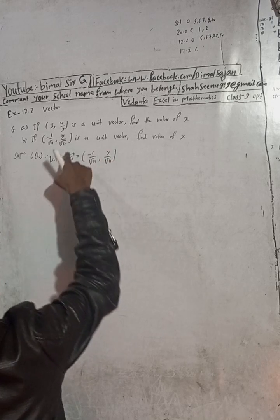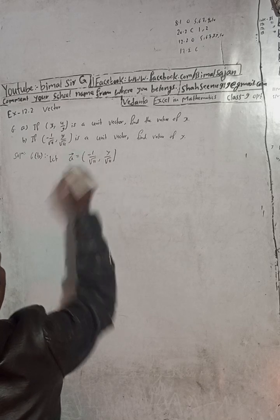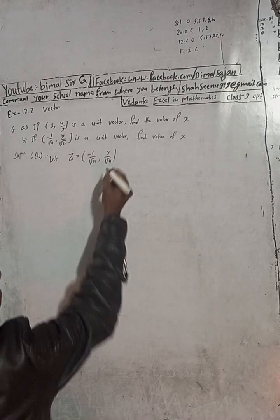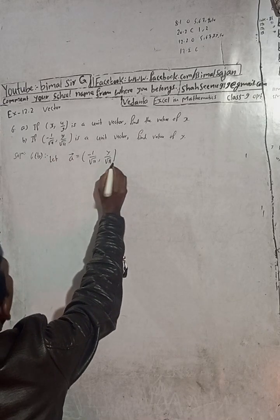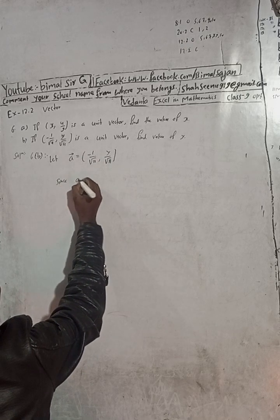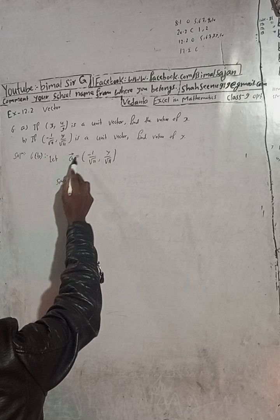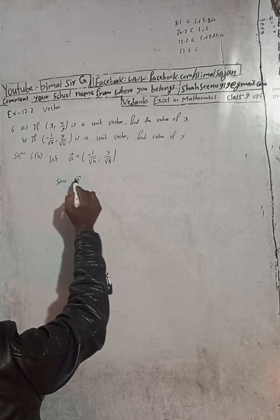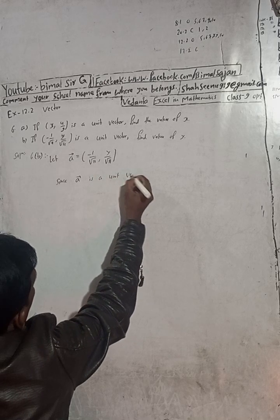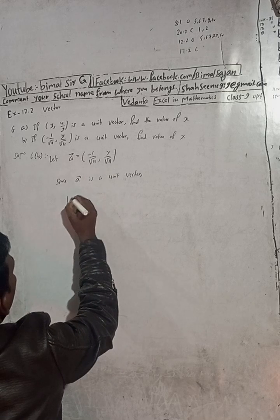Since vector a is a unit vector, the magnitude of vector a is equal to one. The modulus or magnitude of the unit vector equals one.